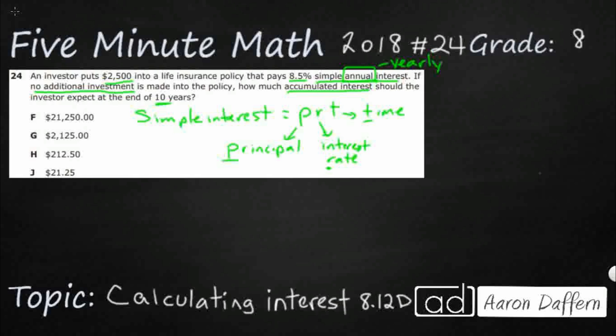So all we need to do is plug it in and look at our answers here. It's all 2, 1, 2, 5. The question is how many zeros and where does that decimal place go? So I can tell you our answer is going to have a 2, 1 and a 2, 5, but let's see if we can plug this in.